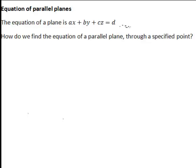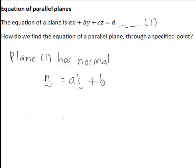And to see how to do this, if we call this first plane equation 1, then plane 1 has a normal vector of the form N equals AI plus BJ plus CK.